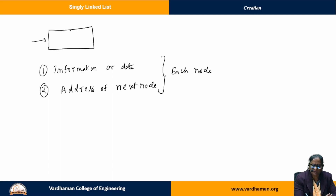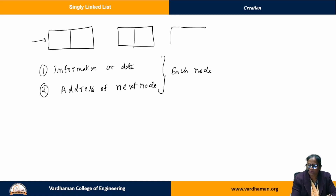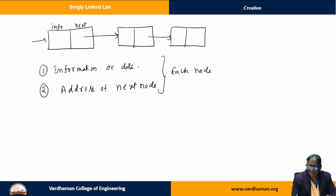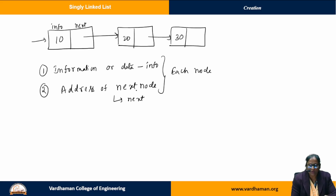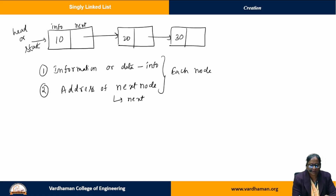Let me take an example. Here I am taking a linked list with three nodes, each having an info field and a next field. I am referring to the information of the data as info and the address of the next node as next. The first node will always be addressed by start or head. The end of the list will be indicated by placing null in the next field of the last node.